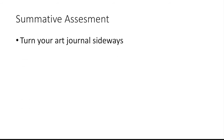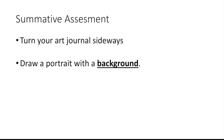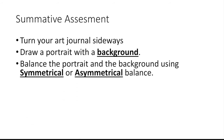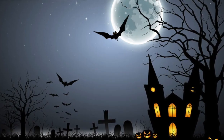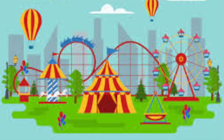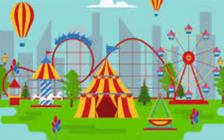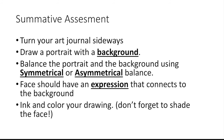We're going to get into our summative assessment and return to our portrait drawing. You're going to turn your art journal sideways and draw a portrait with a background. You can balance the portrait and background using symmetrical or asymmetrical balance. The face should have an expression that connects to the background — if there's something scary in the background they should have a scary face, happy background means a happy face. We're going to ink and color the drawings, and don't forget to shade the face like we did before.